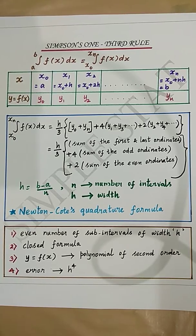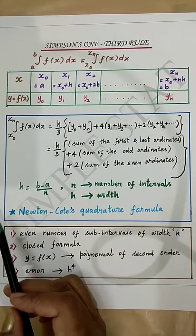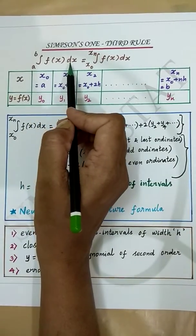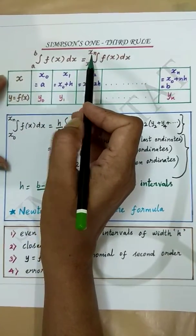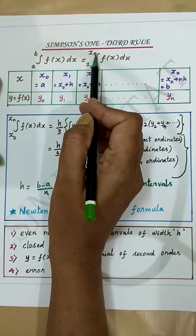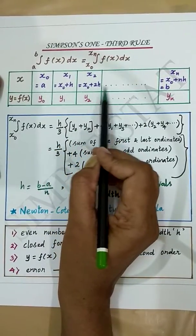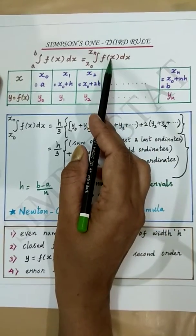Simpson's one-third rule. Here we have to compute the definite integral from a to b of f(x)dx, which can be written as the integral from x₀ to xₙ of f(x)dx, and we are given tabular values of the integrand f(x).